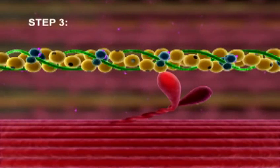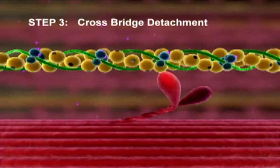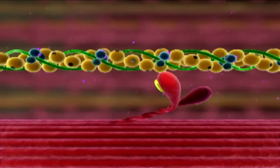Step 3: Crossbridge Detachment. When another ATP binds to the myosin head, the link between the myosin head and actin weakens and the myosin head detaches.